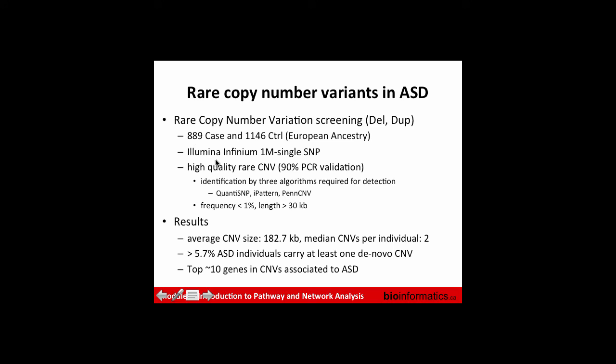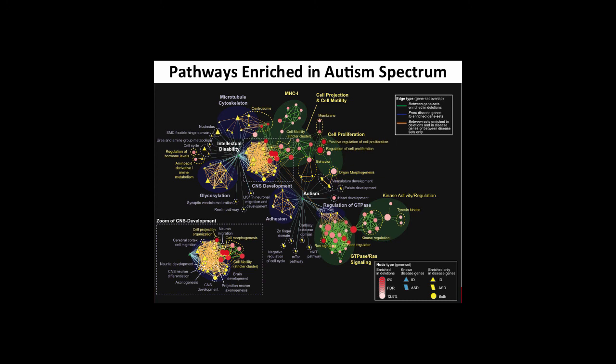The team analyzed rare copy number variants — whole regions of the genome that are deleted or amplified — using a SNP chip with about a million SNPs spread evenly across the genome. With about a thousand cases and controls, a series of SNPs not detected would indicate a deletion, and higher intensity would suggest amplification. They focused on CNVs present at one percent or less frequency in the population. Initially they identified only a handful of genes affected by CNVs associated with autism cases.